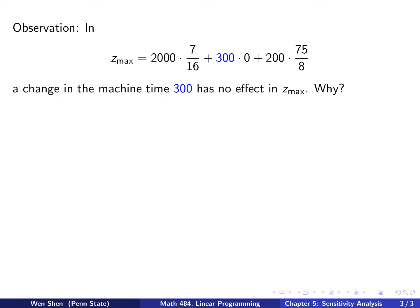Let's make a further observation. Z_max is computed from aluminum, machine time, and total labor. Interestingly, there is a zero coefficient for machine time in Y*. So if I want to change the machine time a little bit, a change there will make no difference because it's multiplied by zero. Why does that happen?